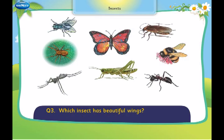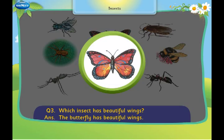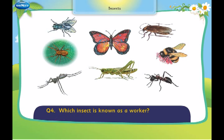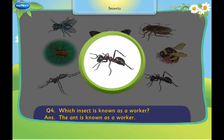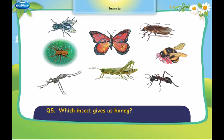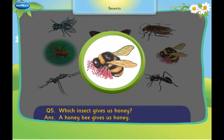Which insect has beautiful wings? Which insect is known as a worker? The butterfly has beautiful wings. A honeybee gives us honey.